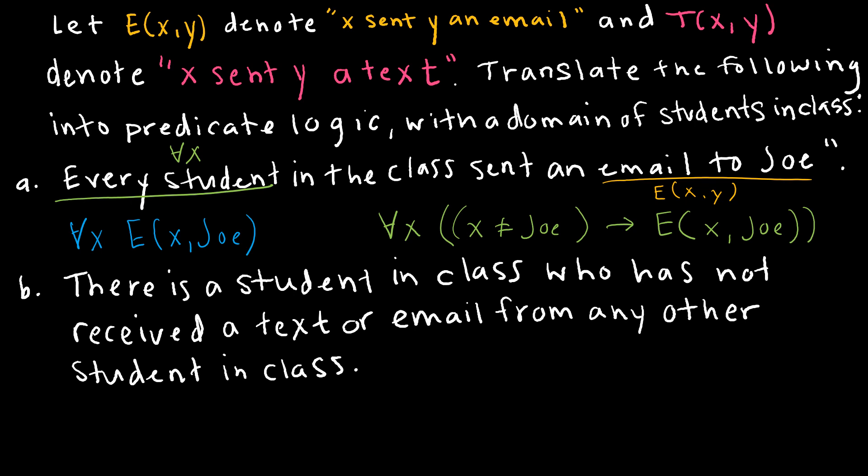Looking at our second example, and again you can always press pause and try these questions on your own first. But this one says there is a student, so again right when you see there is a student, hopefully your math brain says there exists some student x. In class, again in class just tells us that that's in the domain, who has not, so not received a text. So remember that's going to be T(x,y) and we'll have to figure out what to do with those letters, if that's the correct order. Not received a text or an email. So again we're saying not an email from any other student in the class.